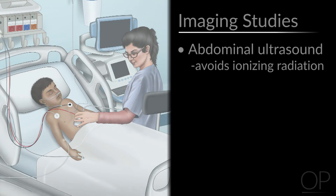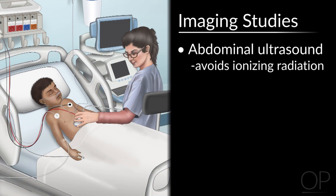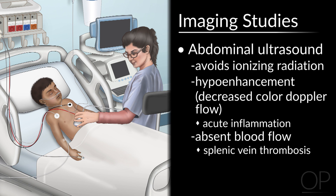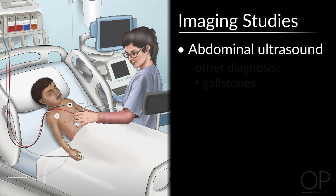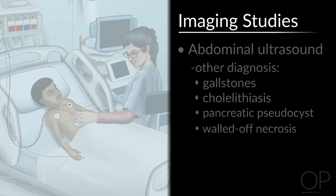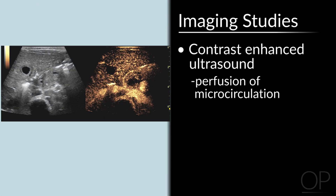You may also consider ordering imaging. Ultrasound offers the benefit of avoiding ionizing radiation, which is often seen with CT scans. An ultrasound will tell you if there's hypoenhancement suggestive of acute inflammation, or if there is absent blood flow of the splenic vein, thrombosis, or even a portal vein thrombosis. Ultrasound is also the optimal study for evaluation of gallstones or cholelithiasis. It can also demonstrate the presence of fluid collections such as a pancreatic pseudocyst or localized collections known as walled-off necrosis. Newer modalities such as contrast-enhanced ultrasound provide information on the perfusion of the microcirculation, but not all centers are able to offer this.